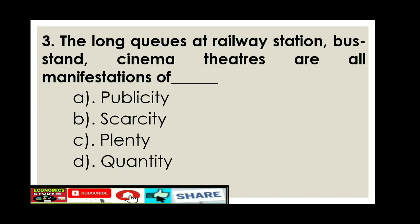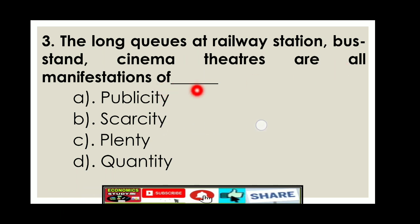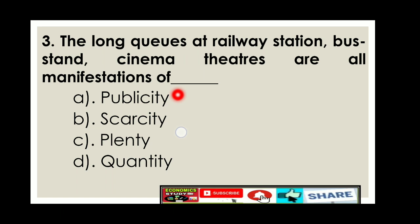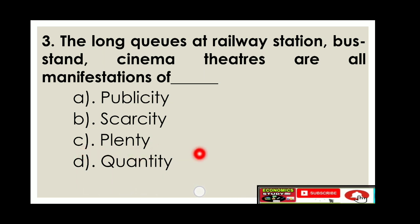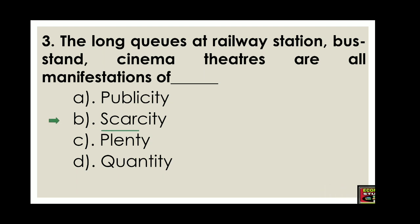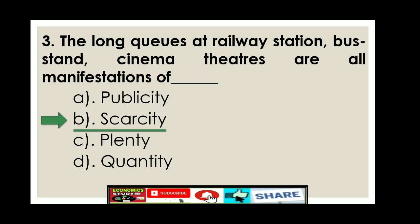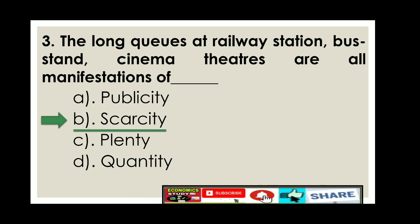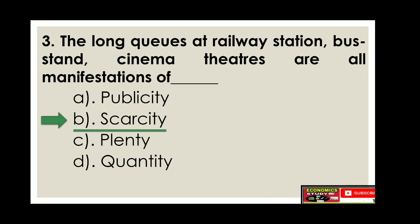Question number three: The long queues at railway stations, bus stands, and cinema theaters are all manifestations of dash — option A: publicity, option B: scarcity, option C: plenty. The right answer is option B: scarcity. Scarcity refers to a gap between limited resources and theoretically limitless wants. The notion of scarcity is that there is never enough to satisfy all conceivable human wants, even at an advanced state of human technology.